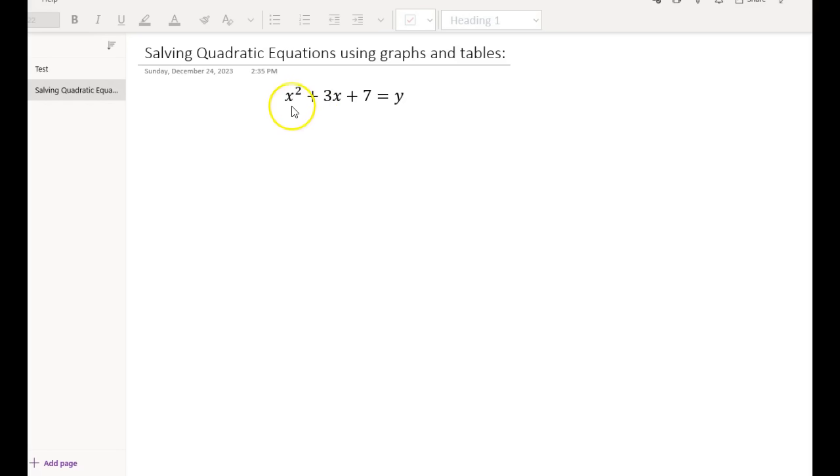So this is the equation that we have right now: x² + 3x + 7 = y. Basically what we do solving these equations is we set y equals 0.